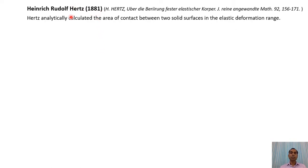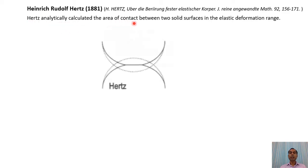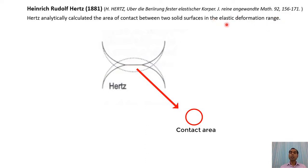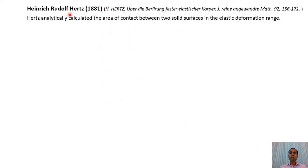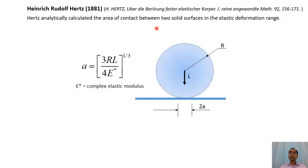In 1881, Hertz gave a very important relation. He analytically calculated the area of contact between two solid surfaces in the elastic deformation range. If two solids are interacting within the elastic deformation range, we can find out the contact area. This was a milestone in contact mechanics and tribology. The Hertz equation is still used to estimate the contact area between two surfaces, for example, the contact area between a sphere and a plane surface.